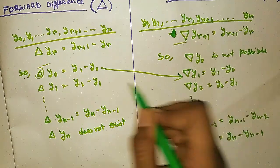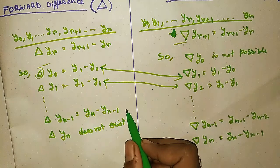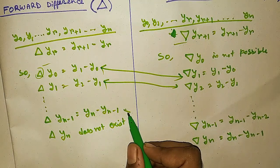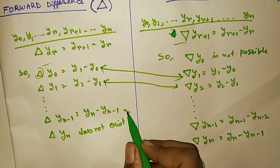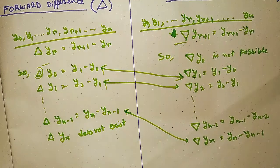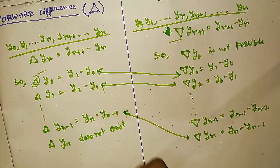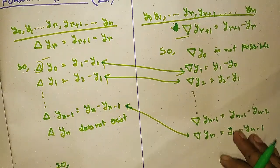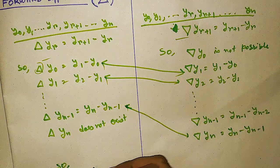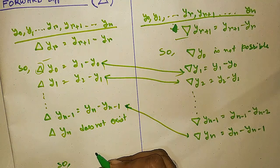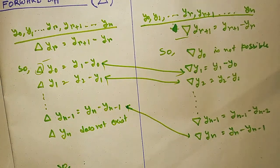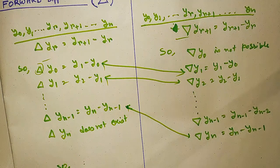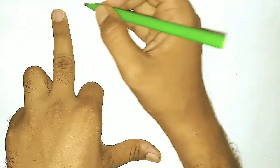In the delta operator we compute delta y0, delta y1, up to delta yn and we lose one element — specifically yn. In the nabla operator we lose y0. So del and nabla give totally the same values; the only difference is their suffix. The suffix in nabla is one more than in the corresponding del operator. Now we are going to find the second forward difference, i.e., with power 2, so delta squared.